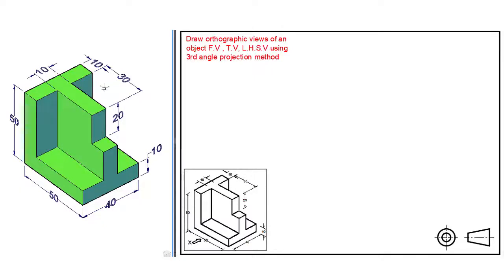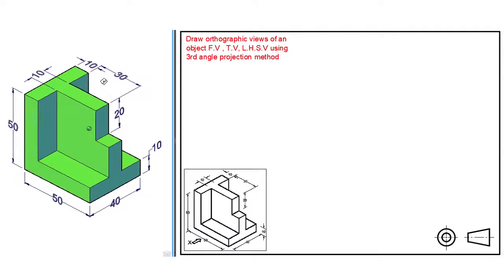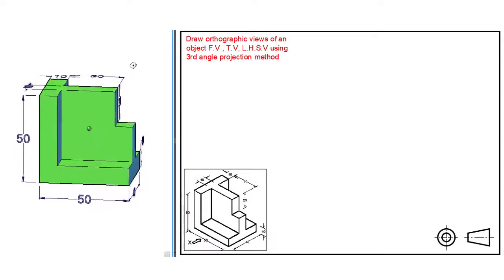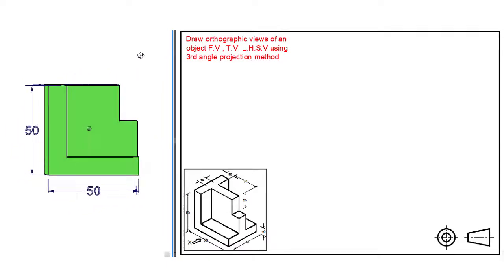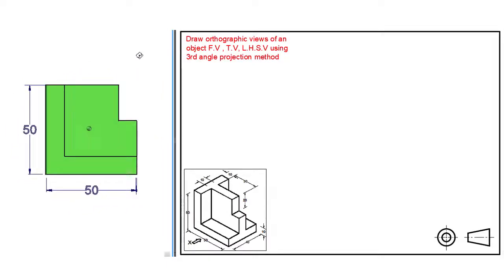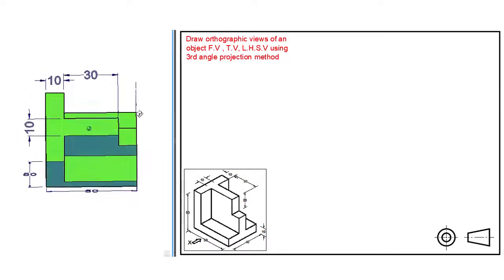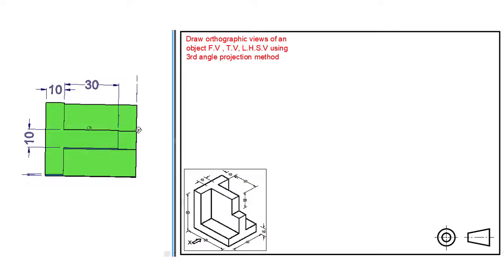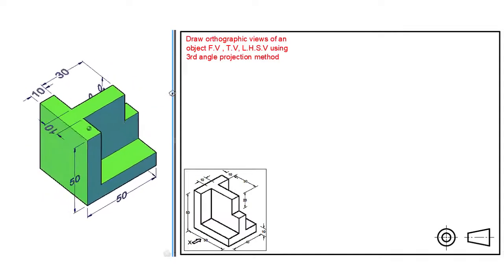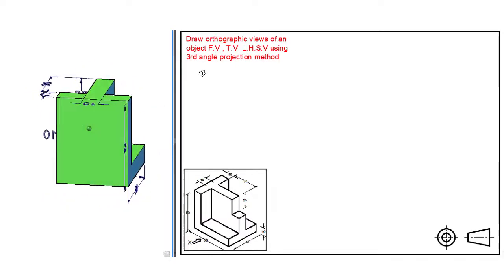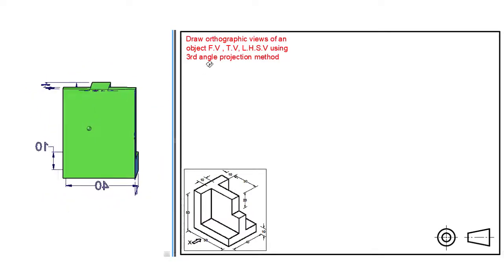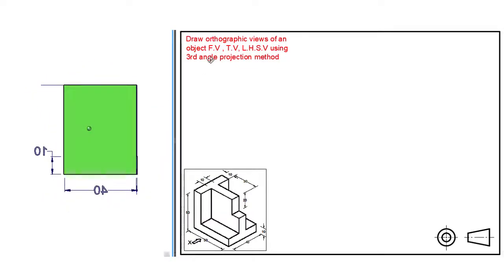Now let us observe the different views of the given 3D object with respect to direction of view. So we can imagine the different orthographic views of the given object.